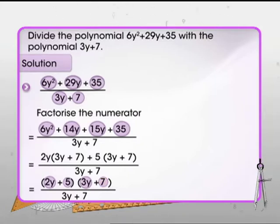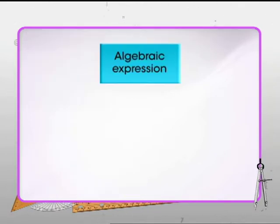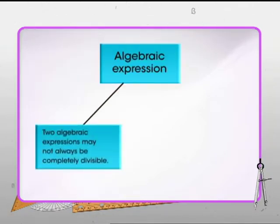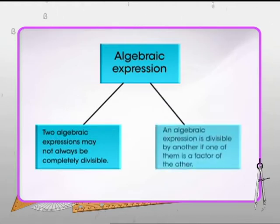Now we can easily divide 2y plus 5 whole into 3y plus 7 whole with 3y plus 7 by canceling the common factor. We get the answer as 2y plus 5. One point is important to note: just like numbers, it's not necessary that two algebraic expressions or polynomials will always be completely divisible. It holds true only if one of them is a factor of the other.